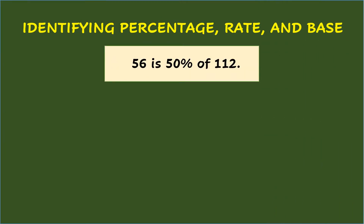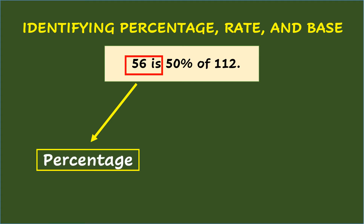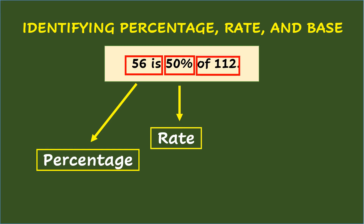Identifying the three elements — percentage, rate, and base — is essential in solving percent problems. Example: 56 is 50% of 112. Analyzing the number sentence, since 56 is only half of 112 as suggested by the given percent, 56 is only part of the total number which is 112. Take note that it also has the word 'is' beside it, so it is called percentage. 50%, which has a percent sign, is called rate. Meanwhile, 112, which is the whole or total number and has the word 'of,' is called base.